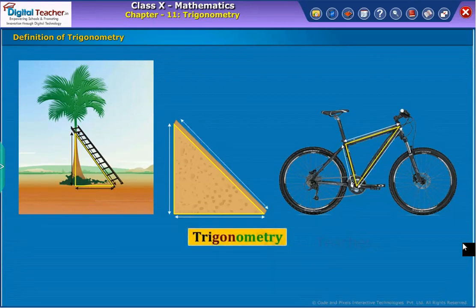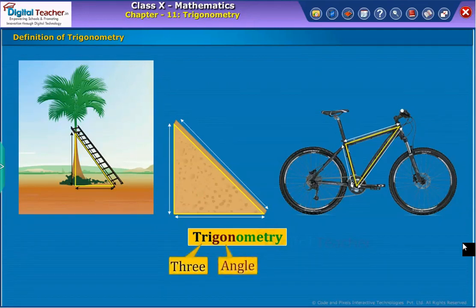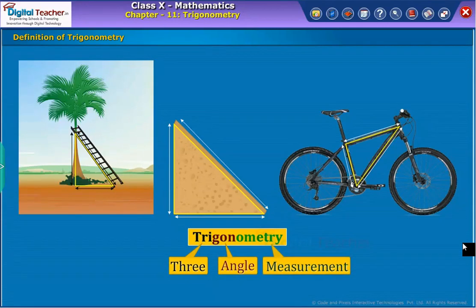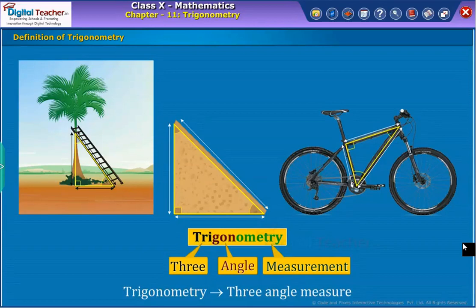The word trigonometry is derived from Greek words. Tri means three, gon means angle, and metron means measurement. Therefore, trigonometry means the three angle measure.